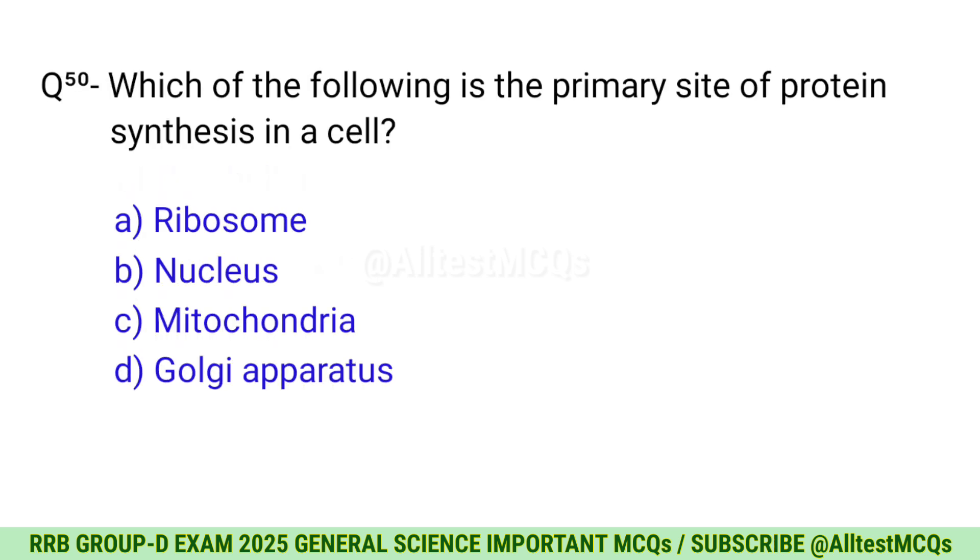Question 50: Which of the following is the primary site of protein synthesis in a cell? Right option is A, Ribosome.